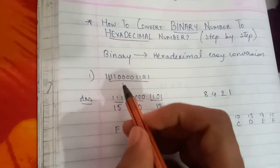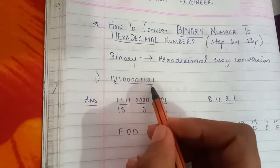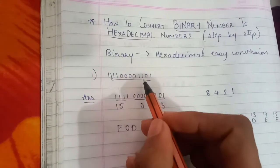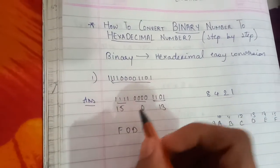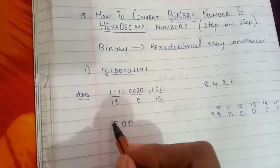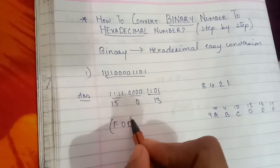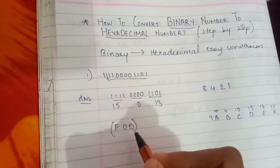So the binary number, when we convert it to hexadecimal, the answer is F0D.